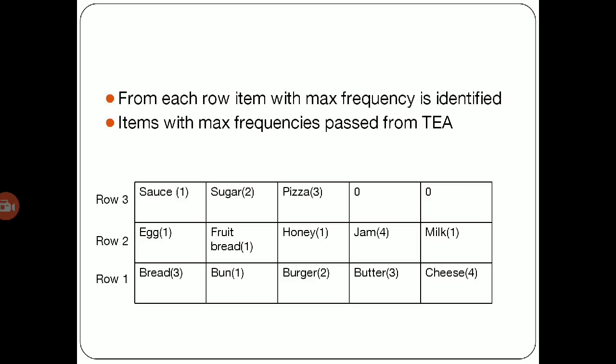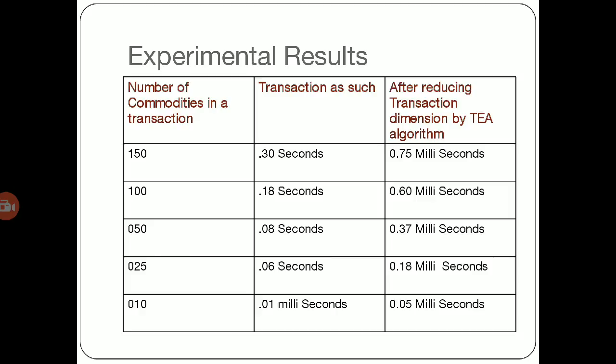Items with max frequencies are passed from TEA, and here is the output what we got: the items with the maximum frequencies have located. The values in the parentheses show the max frequency count. Like, jam appears four times, cheese appears four times, bread, burger, and butter appear three times, etc. In this way, we got our result.